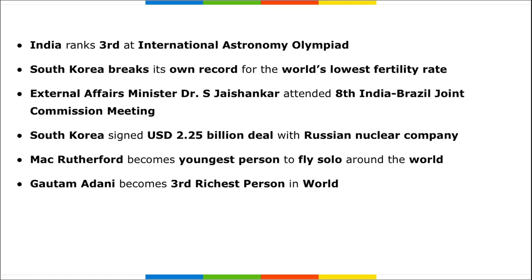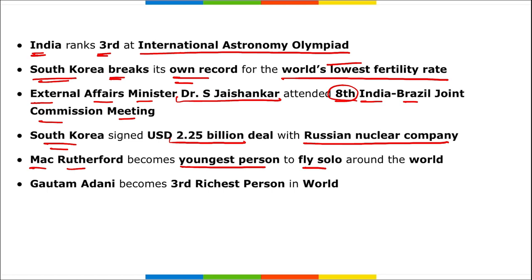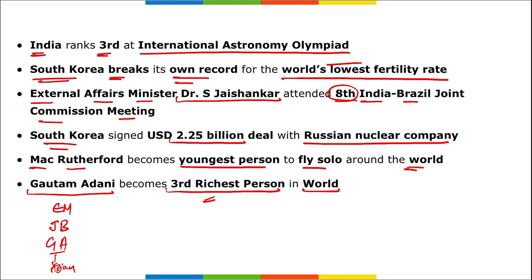India ranked third at the International Astronomy Olympiad. South Korea broke its own record for the world's lowest fertility rate. External Affairs Minister Dr. S. Jaishankar attended the 8th India-Brazil Joint Commission Meeting. South Korea signed a $2.25 billion deal with Russian nuclear company. Mack Rutherford became the youngest person to fly solo around the world. Gautam Adani became the third richest person in the world — he is both the richest Asian and richest Indian. Mukesh Ambani has slipped to 11th position globally.